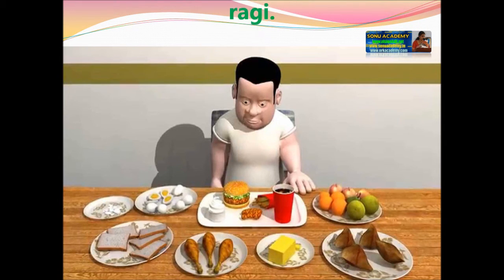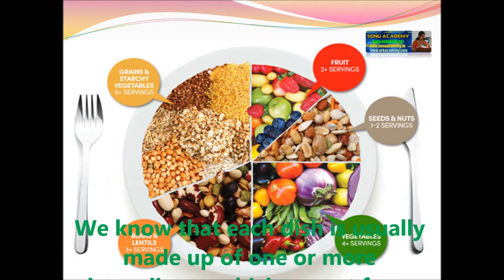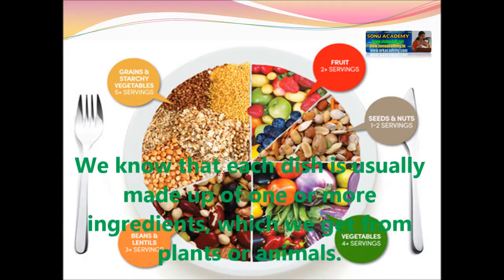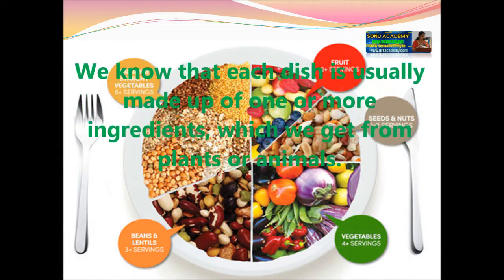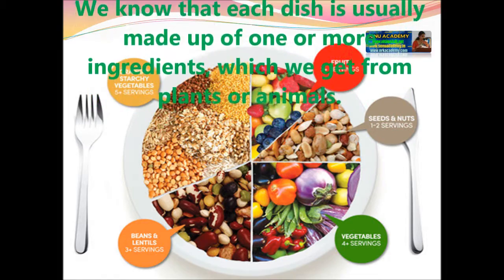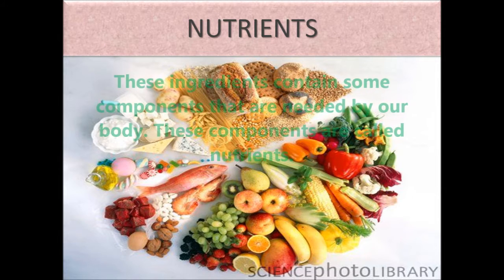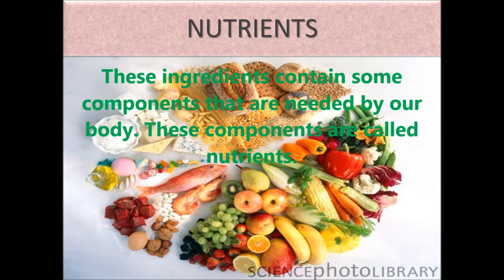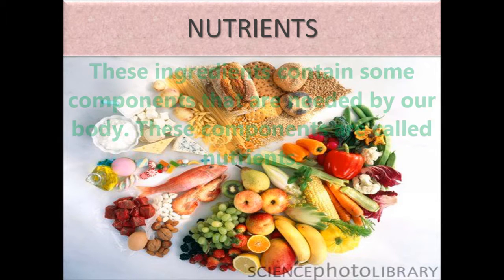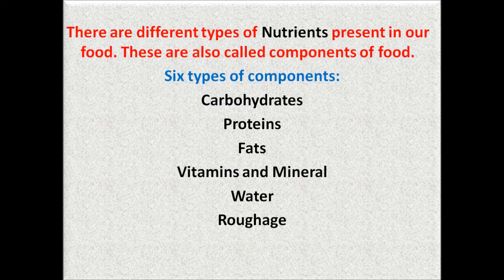Most of our food is made up of these things. Each dish is usually made up of one or more ingredients which we get from plants and animals. These ingredients contain some compounds needed by our body, called nutrients. The major nutrients in our food are carbohydrates, proteins, fats, vitamins, and minerals. In addition, food contains dietary fibers and water, which are also needed by our body.